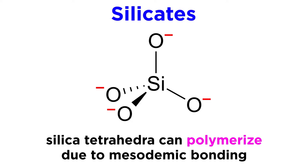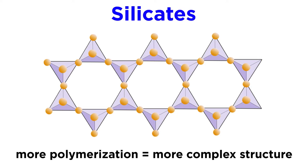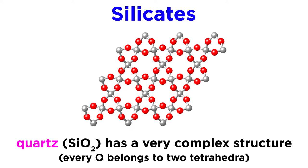Because of this, a given silica tetrahedron can bond with up to four other silica tetrahedra, or none at all. The structural complexity of the silicate minerals increases with the degree of polymerization, and even though quartz, or SiO2, is about as simple as it gets chemically, it is structurally very complex, with its three-dimensional framework of silica tetrahedra.